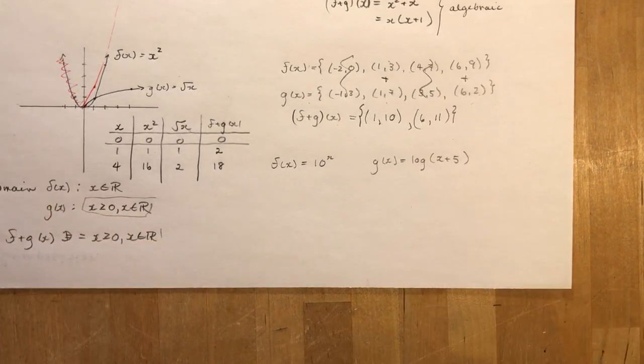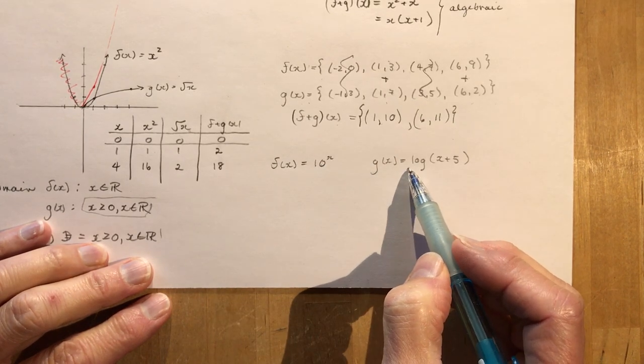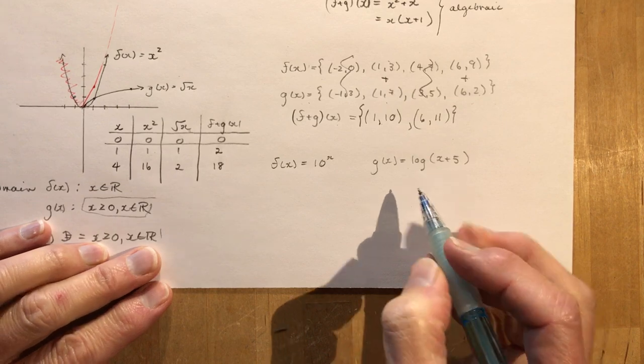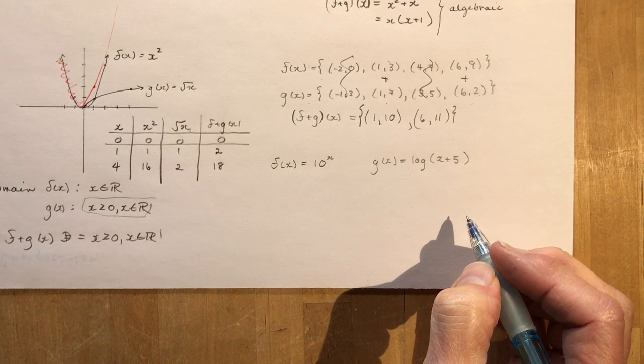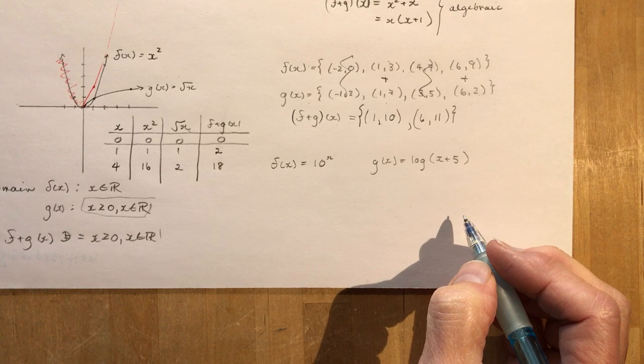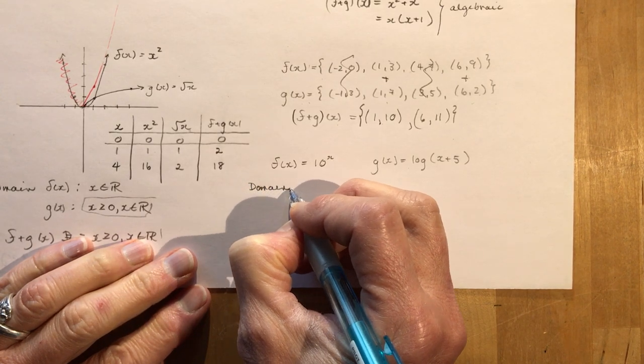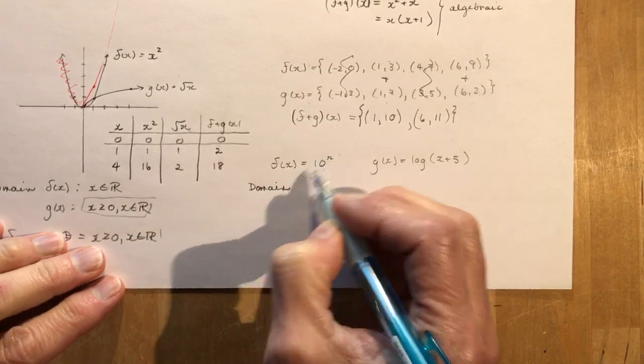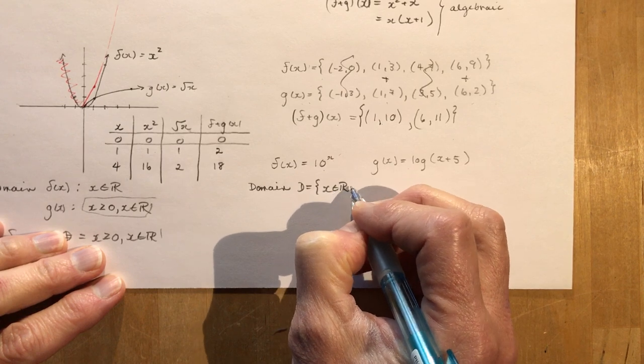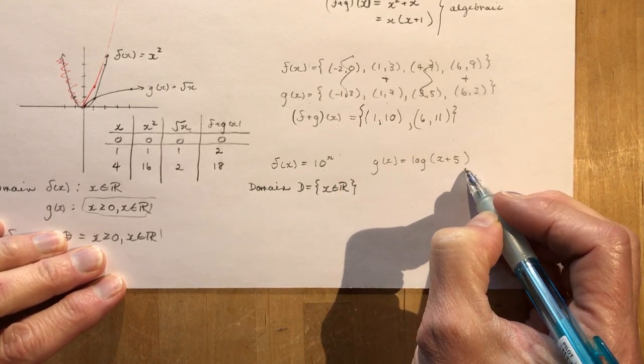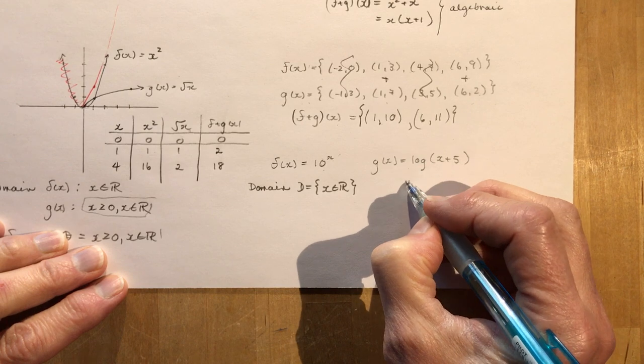One more example here where I have the function of 10 to the x. So I have an exponential function, and I'm going to add the logarithmic function to it. So the question is, what is f plus g at x? Now, in order for you to add them together, if I said, what's the restriction here going to be? I need to know what the domain is. The domain of 10 to the x, what can you put in for x and get an answer? Well, anything. So the domain is x is an element of real numbers. However, for a logarithmic function, you know the log function has to be greater than or equal to 0.